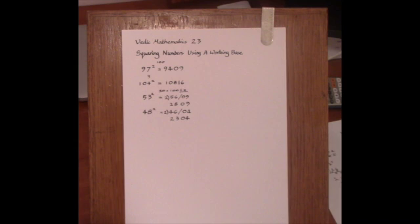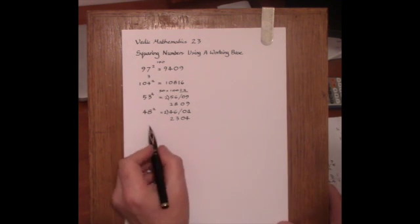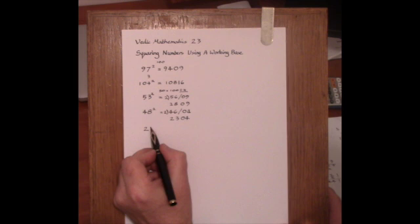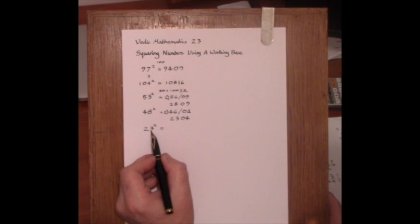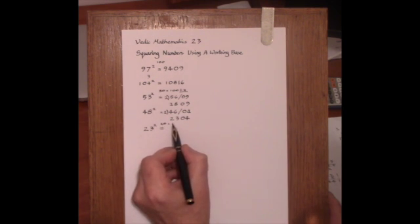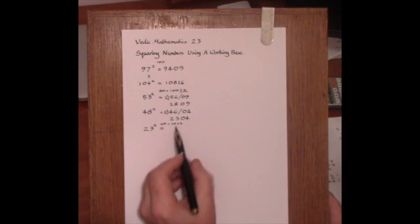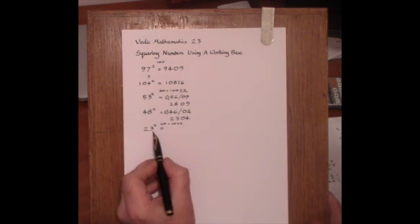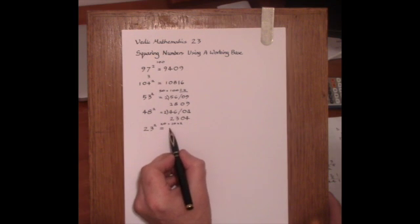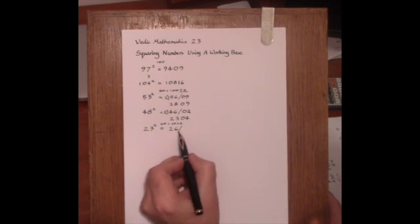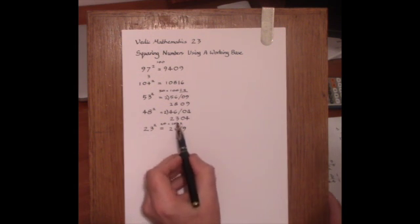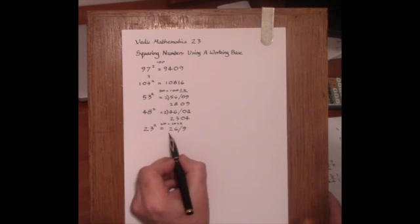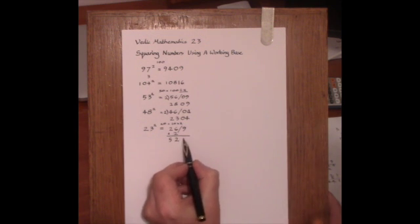Let's have a look at 23 squared. Here we're going to take 20 as the working base which is 2 times 10. 20 equals 10 multiplied by 2, so the left hand side of the answer we're going to multiply by 2. The surplus is 3 so we add it on making 26, and then put down the square of 3 which is 9. Notice that only one digit on the right here because 10 has 1 zero in the base. And then we multiply the left hand part by 2 giving 52, so the answer is 529.